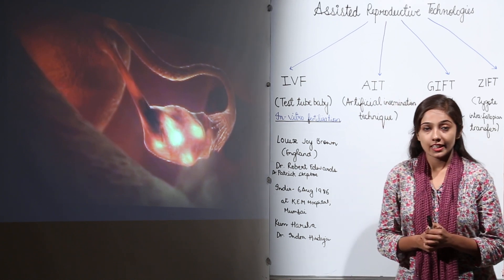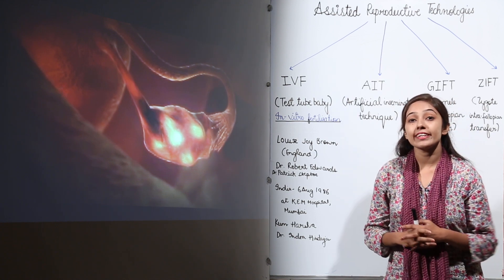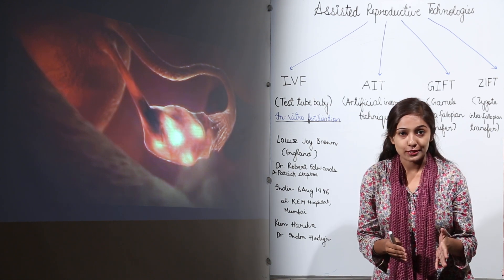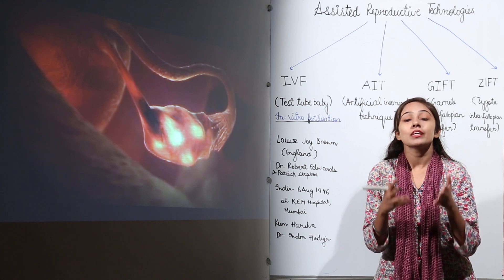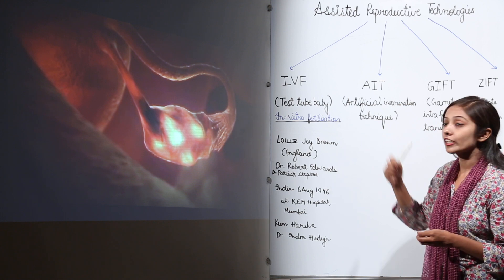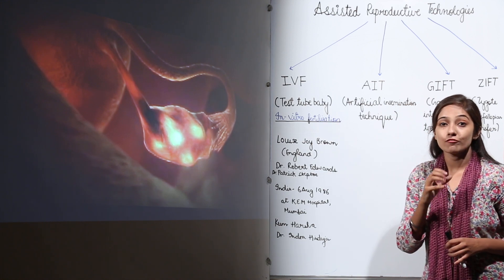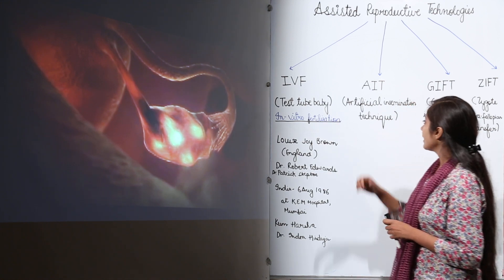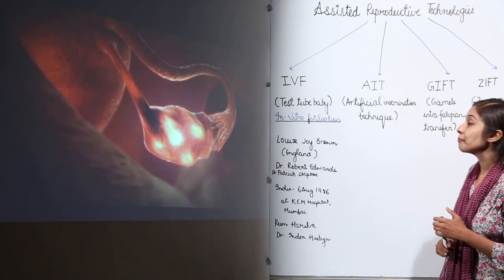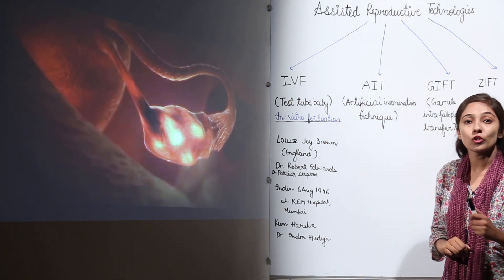In cases of infertility, we can have certain assisted reproductive technologies. Science has made advancement in these technologies so that the couple can actually have a child, and that child can be produced very normally. These technologies include IVF, that is in vitro fertilization; AIT, that is artificial insemination technique; GIFT, that is gamete intrafallopian transfer; and ZIFT, that is zygote intrafallopian transfer.